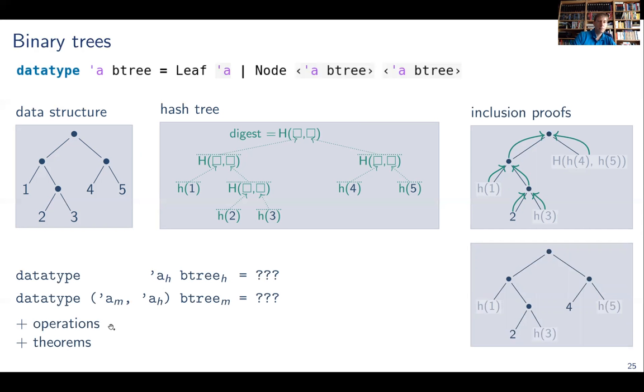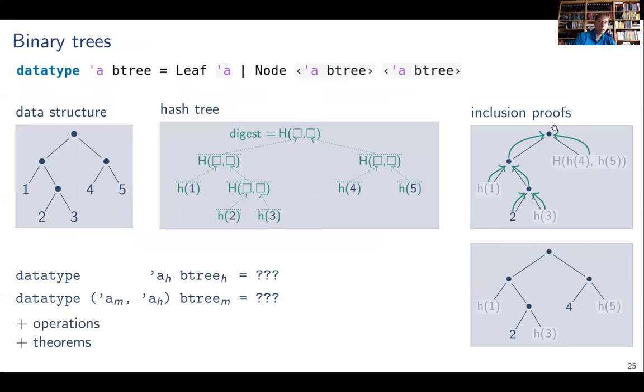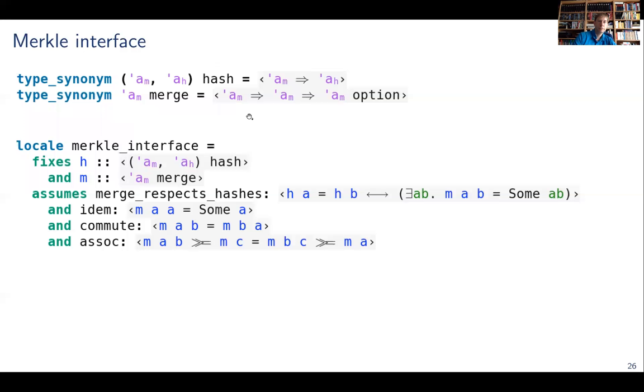What this talk will explain is how we can actually define the type of digest as a data type and those hash trees will be suffixed by subscript h, and how we can build those inclusion proofs and they will carry a subscript m, and how we can systematically define the operations and the theorems. The operations that we'll look at is essentially a hash function. Our focus will be on inclusion proofs because they're the richest data structure here. A hash function from the inclusion proofs to the hash tree.